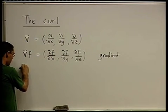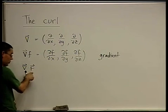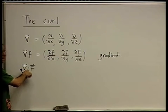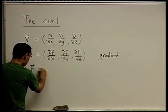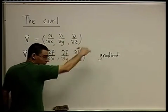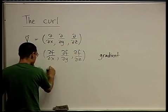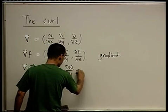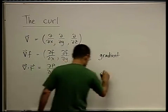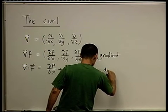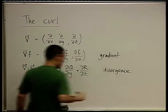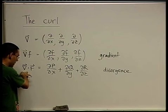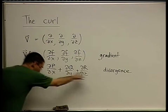Then we saw what happens if we take this same operator and act on a vector field. Now f is a vector field with three components p, q, and r, and the action is like a dot product. What we get is the derivative of p with respect to x, plus the derivative of q with respect to y, plus the derivative of r with respect to z. This is called the divergence.